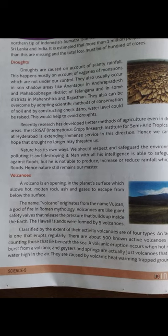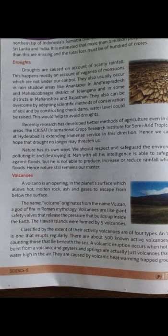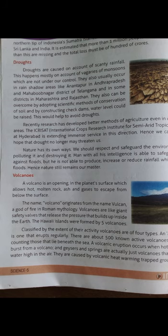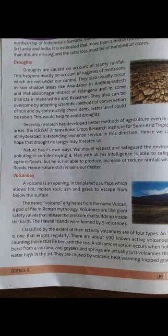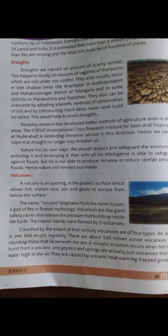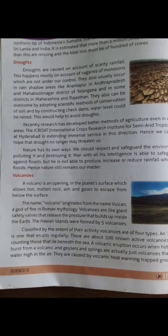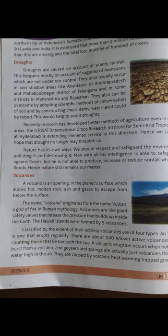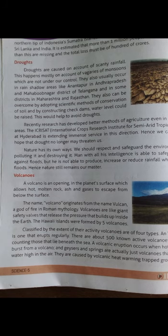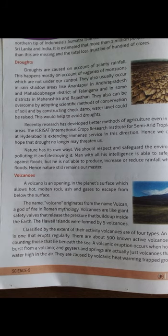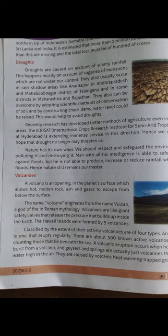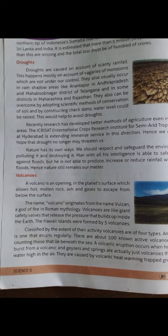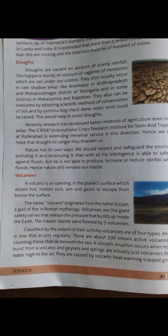A volcano is an opening in the planet's surface which allows molten rock, ash, and gases to escape from below the surface. The name volcano originates from Vulcan, a Roman god of fire in Roman mythology. Volcanoes are giant safety valves that release the pressure that builds up inside the earth. The Hawaii Islands were formed by five volcanoes. Classified by extent of their activity, volcanoes are of four types: active volcanoes that erupt regularly; there are about 500 non-active volcanoes on earth, not counting those beneath the sea. The liquid rocks inside a volcano are called magma, and when magma flows out, it is called lava.